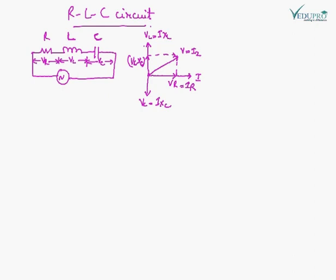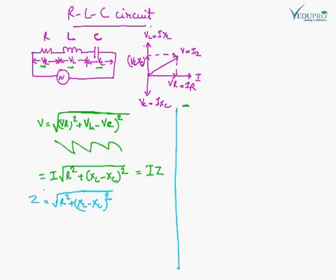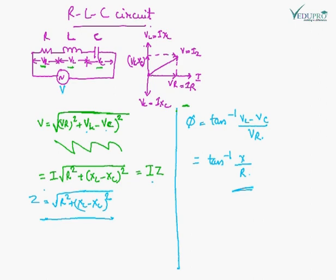In the RLC series circuit, R, L, and C are connected in series. The voltage drop across R is I times R, the drop across L is I times XL, and the drop across C is I times XC. The total applied voltage equals the square root of VR squared plus (VL minus VC) squared. Simplifying, V equals IZ where Z equals the square root of R squared plus (XL minus XC) squared. The phase angle phi equals tan inverse of (XL minus XC) upon R.